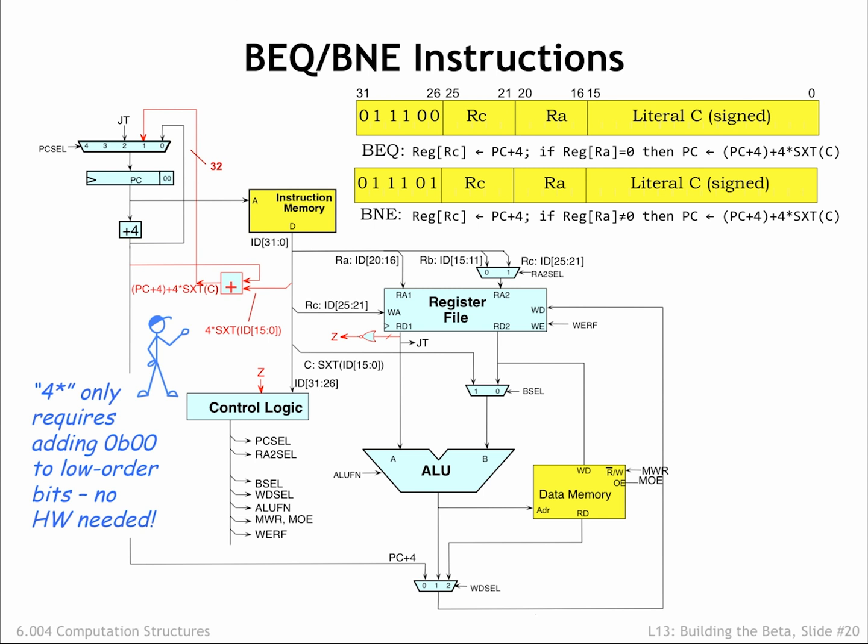We do need some logic to determine if we should branch or not. The 32-bit NOR gate connected to the first read data port of the register file tests the value of the RA register. The NOR's output Z will be 1 if all the bits of the RA register value are 0 and 0 otherwise.